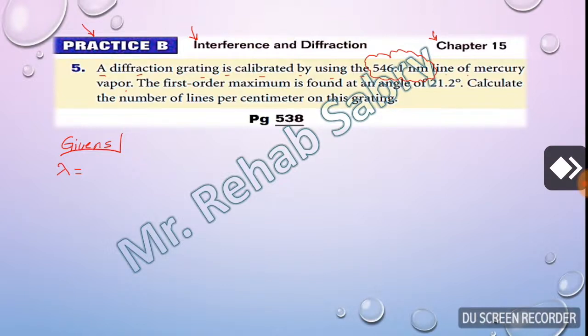So the wavelength is 546.1 nm. But as you know, whenever I find this symbol n, it means nanometer. So I have to replace the symbol n by 10 to the power of negative 9 because of the presence of nano. So this will be 546.1 times 10 to the power of negative 9 meter.